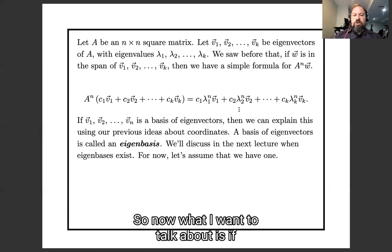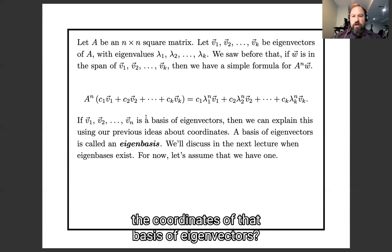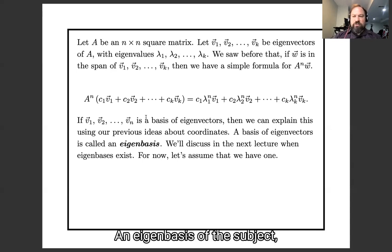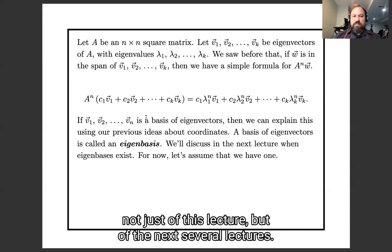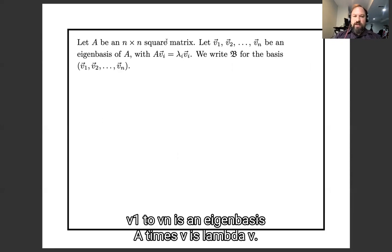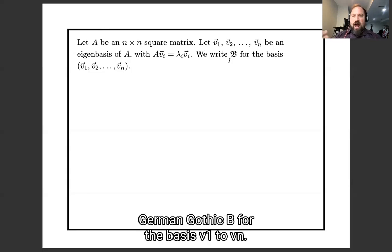So what we now want to talk about is if we have a basis of eigenvectors, what does this look like in the coordinates of that basis of eigenvectors? The basis of eigenvectors is what we are going to call an eigenbasis, and eigenbases are the subject not just of this lecture but of the next several lectures. So A is an n by n square matrix, v1 through vn is an eigenbasis, A times v is λv, and I'll use this German gothic b for the basis v1 through vn.